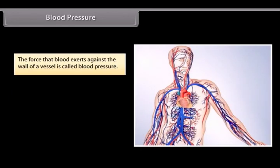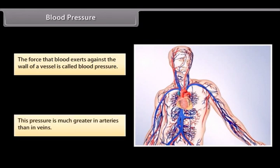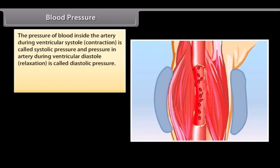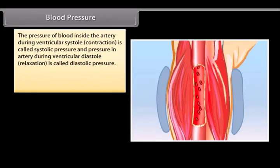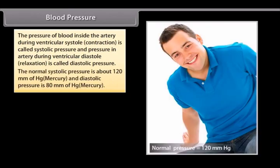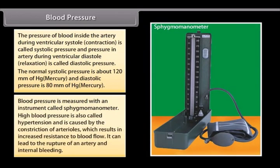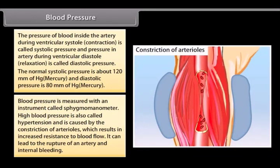Blood pressure. The force that blood exerts against the wall of a vessel is called blood pressure. This pressure is much greater in arteries than in veins. The pressure of blood inside the artery during ventricular systole contraction is called systolic pressure and pressure in artery during ventricular diastole relaxation is called diastolic pressure. The normal systolic pressure is about 120 mm of mercury and diastolic pressure is up to 80 mm of mercury. Blood pressure is measured with an instrument called sphygmomanometer. High blood pressure is called hypertension and is caused by the constriction of arterioles which results in increased resistance to blood flow. It can lead to the rupture of an artery and internal bleeding.